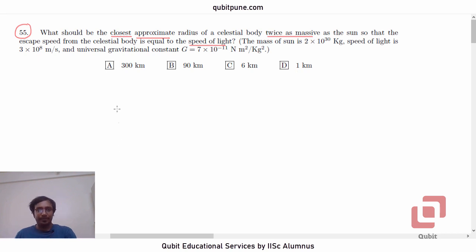To begin with, let us first write down the formula for the escape speed. What is the formula? V_escape is √(2gr), where g is the acceleration due to gravity. If we use the formula that it is GM/r² times r, then the escape velocity becomes √(2GM/r).